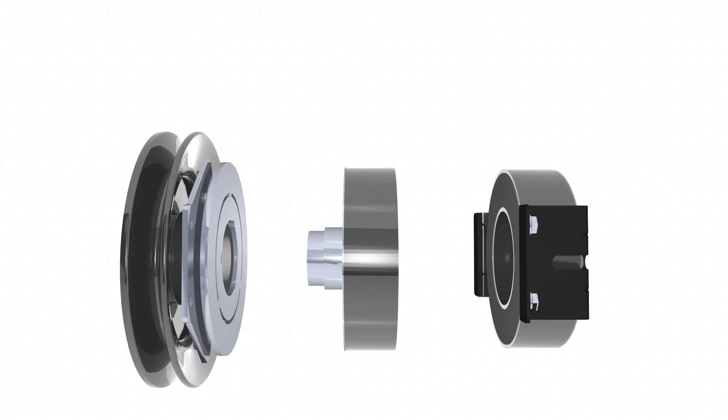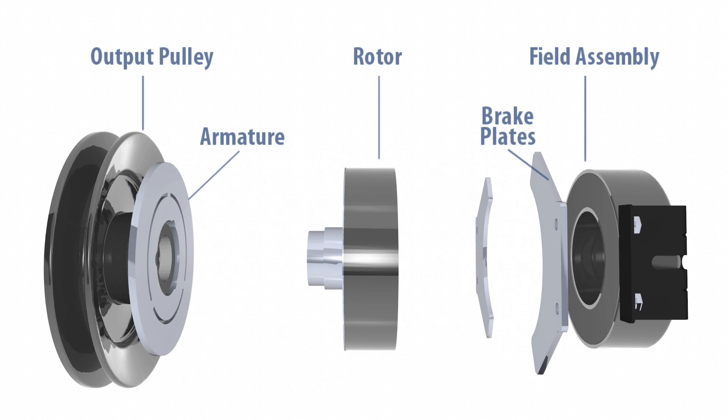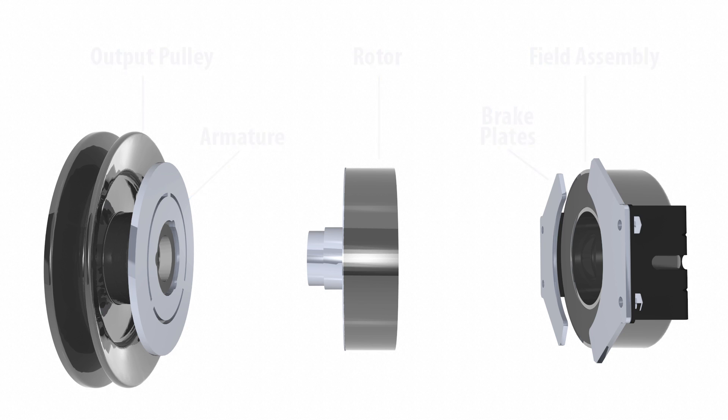Ogura PTO clutch brakes are one piece designs. The key components to the clutch are output pulley, armature, rotor, brake plates, and the field assembly.